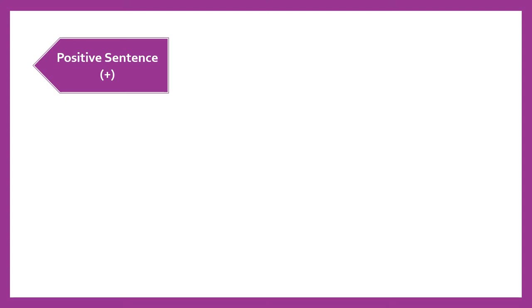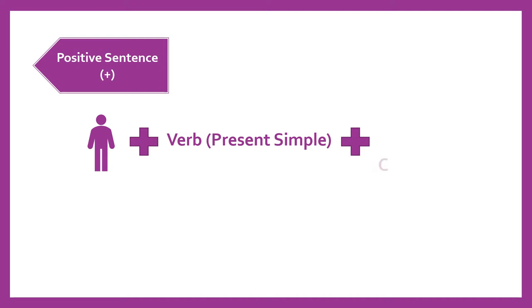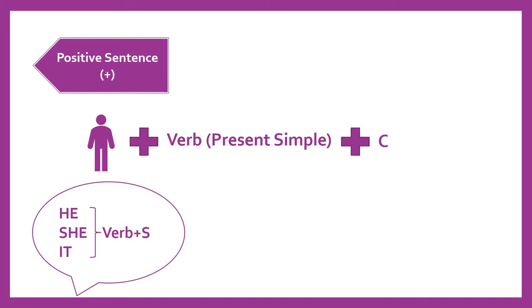Now we're going to see the three types of sentences. We're going to start with the positive sentence. So we start with any pronoun, next we use a verb in the present simple tense, and finally we end with the complement. But remember: when we have the pronoun he, she, or it, we add an S to the verb — only in the positive sentence.